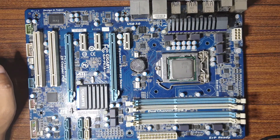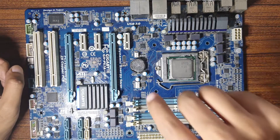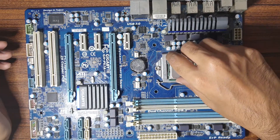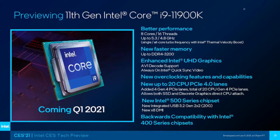On 11th gen Intel Core processors, which offer 20 PCI lanes, the lanes are accessible but not all in the form of PCI slots. The 11th gen processors have 16 lanes connecting to the X16 slot, just as with 10th gen CPUs, but the extra four lanes connect to an M.2 slot which can be used for adding an NVMe SSD. So while the extra four lanes are user accessible, they are limited to SSD installation.